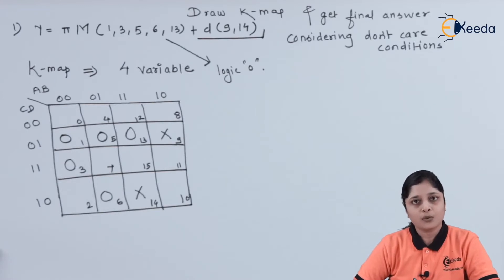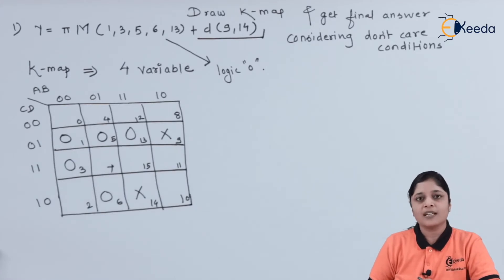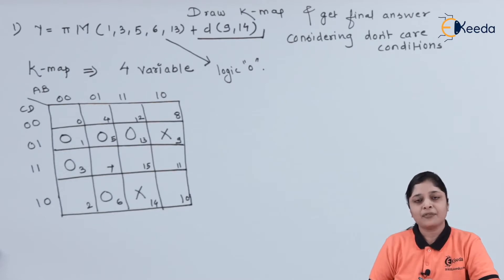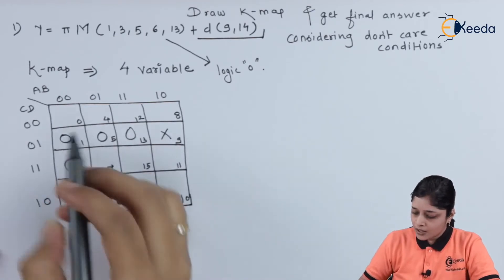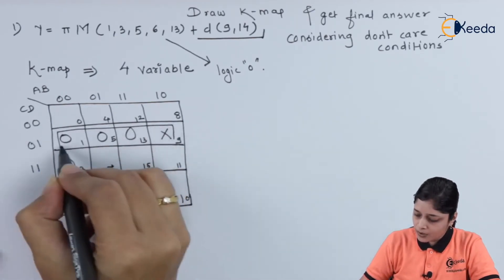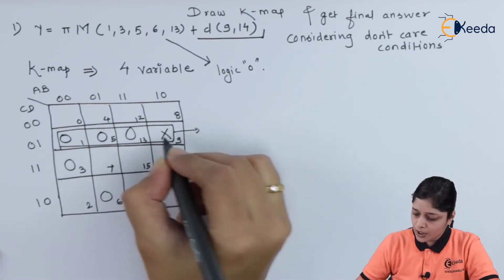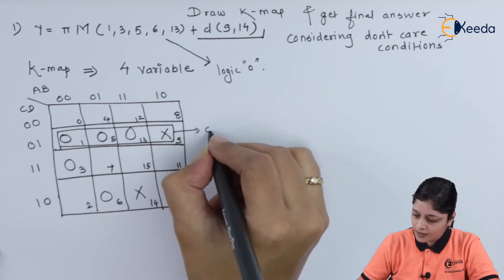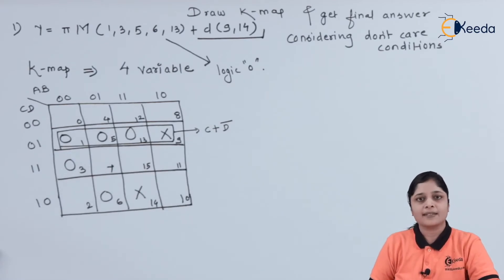Now start the grouping process. First we try for a group of 8 zeros — no possibility. Then we try for a group of 4 zeros. The don't care conditions allow us to make a group of 4 zeros. The equation for this group is c plus d-bar.